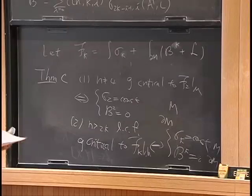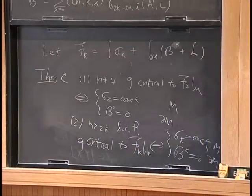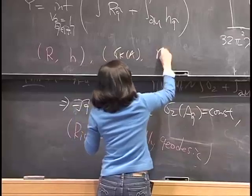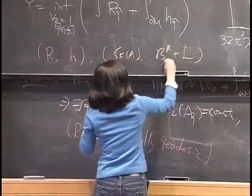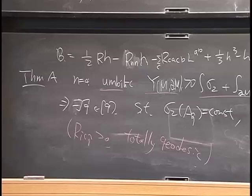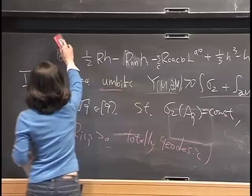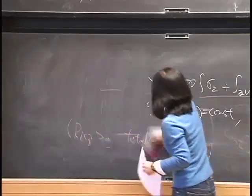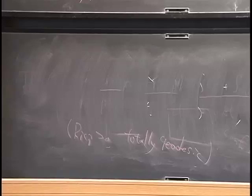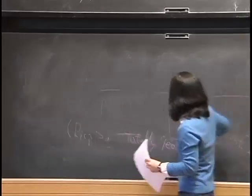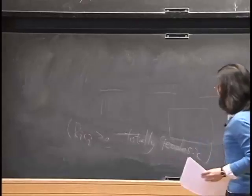In the rest of the talk, I will focus on the PDE — how to solve the boundary value problem of fully nonlinear equations. The sigma-k equation is a fully nonlinear equation with a complicated boundary condition. The boundary condition, after conformal change, involves the tangential Hessian. The equation is a Hessian equation with gradient terms in the interior and a Neumann boundary condition coming from the conformal change of mean curvature.